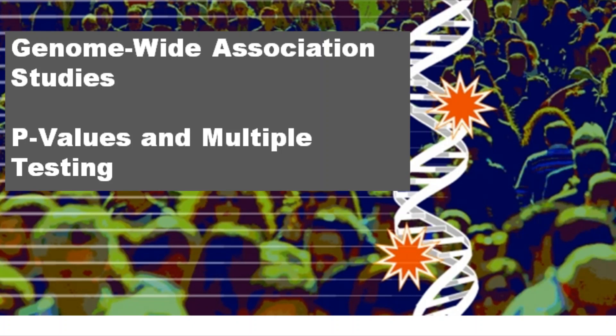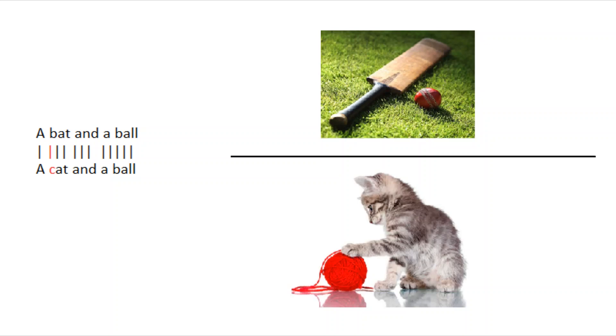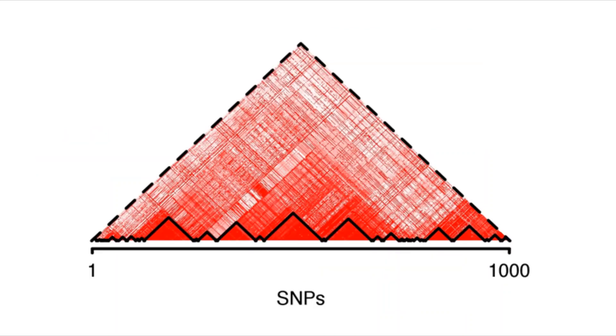Hello everyone and welcome back to this video series on genome-wide association studies. In previous videos we have discussed the relationship between genetic variants and traits and how researchers use genotyping to identify the location of genetic variants associated with complex traits by taking advantage of linkage disequilibrium.